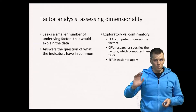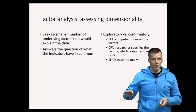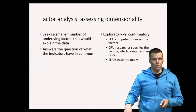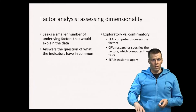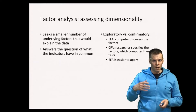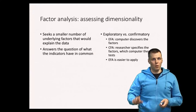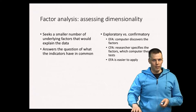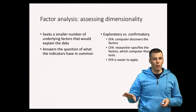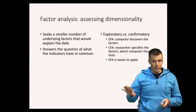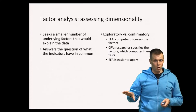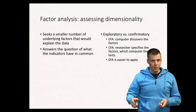In confirmatory factor analysis, for example, you say that the first three indicators measure one thing — that is one factor — then the second three measure another thing that's a second factor, and then the remaining four indicators measure a third thing, and that's the third factor. Then the computer will estimate the model for you and tell you if that model is plausible for the data.